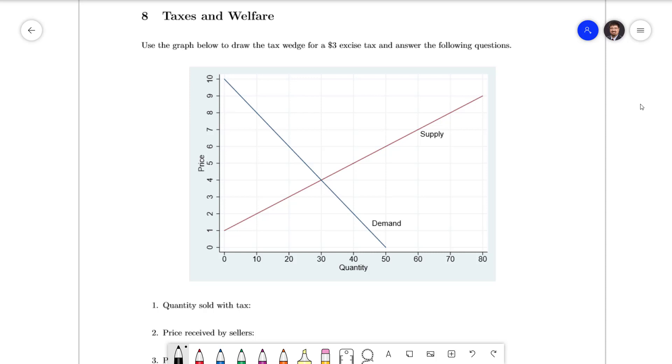We have a graph of a supply and demand curve here and we are told that there is an excise tax of $3. The first thing we always want to do with this is to draw the tax wedge.